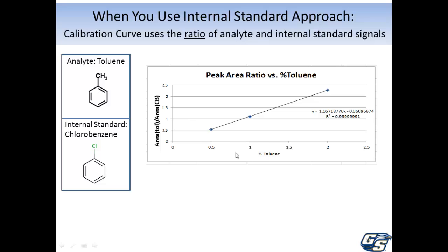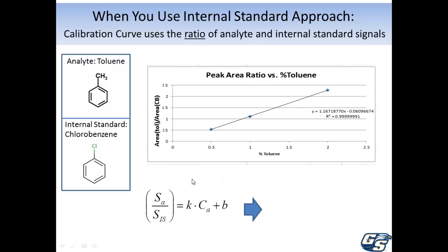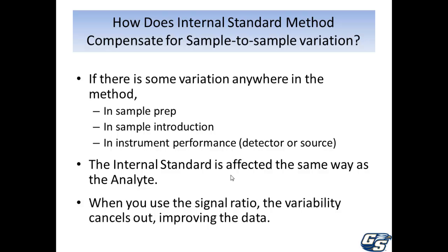The calibration curve is a line, but plotted on the vertical axis is the ratio of analyte signal to internal standard signal. You analyze the unknown, get the ratio from the unknown, plug that into the equation, and solve for the concentration of the analyte in your unknown.